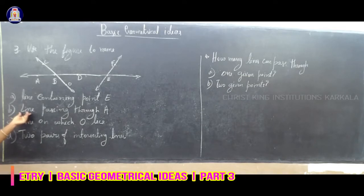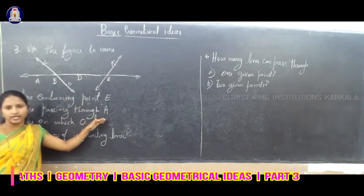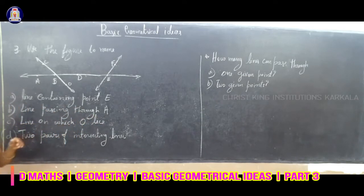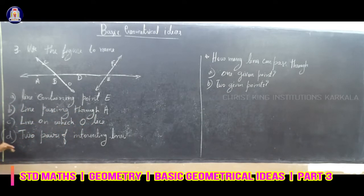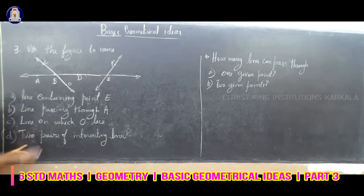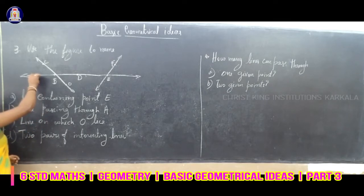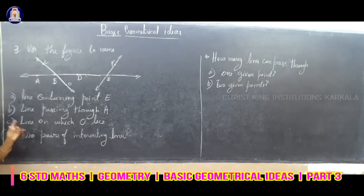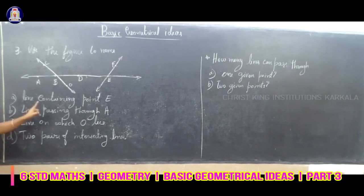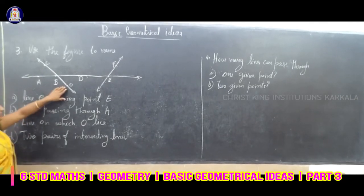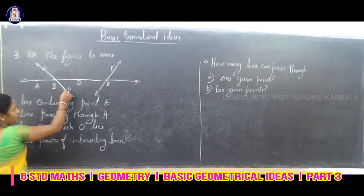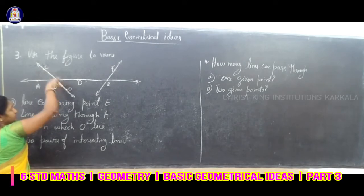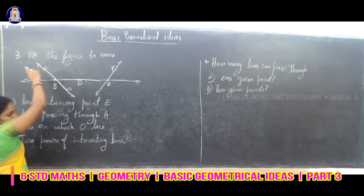The second question is the line passing through A. The point A is visible on the figure. The third question is the line on which O lies. We can see the point O in this line, and that means it is the OC line.